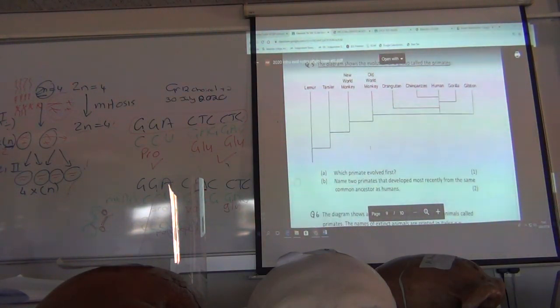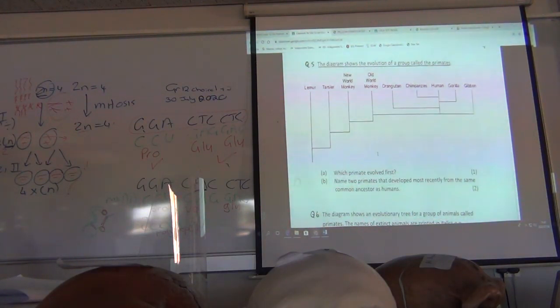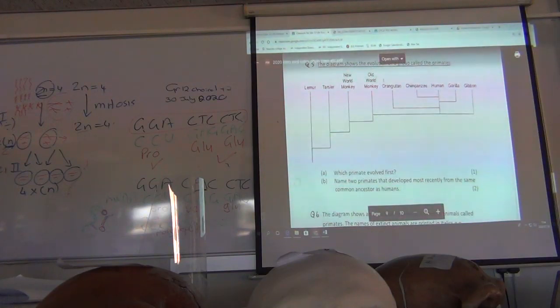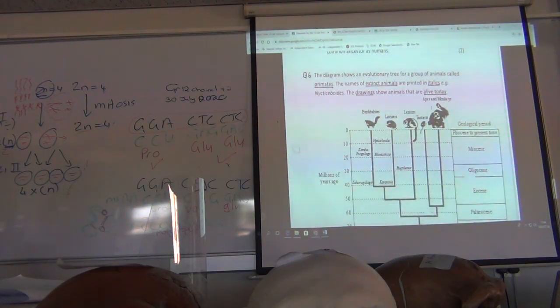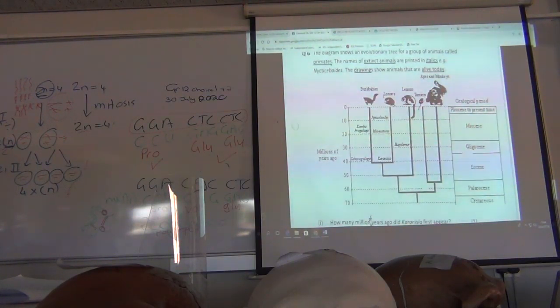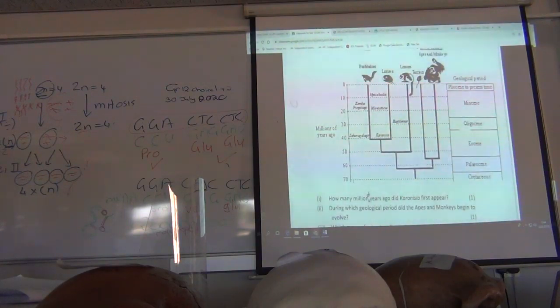Okay, let's do it then. Which primate evolved first? So this is a group of primates, New World and Old World. Which primate evolved first? The New World. Name two primates that developed most recently from the same common ancestor as humans. Gorilla and chimp from the same common ancestor. That was just a short one. So these are primates. The names of extinct animals are printed in italics. The drawings show animals that are alive today. These guys aren't.